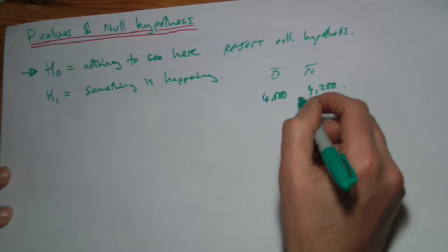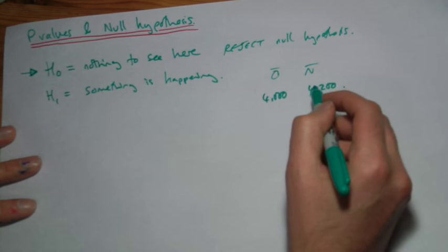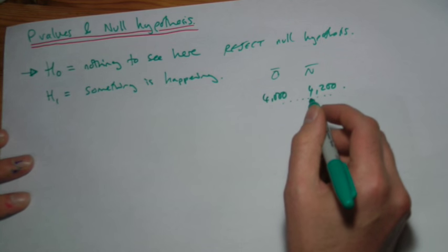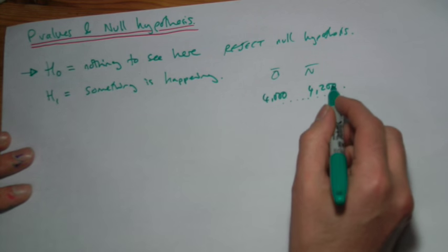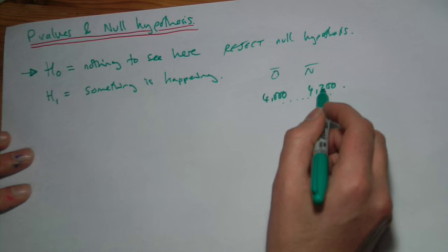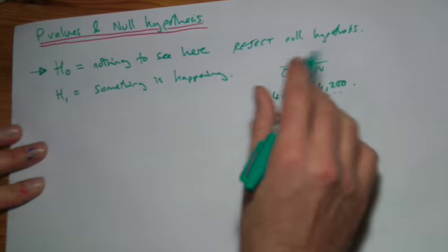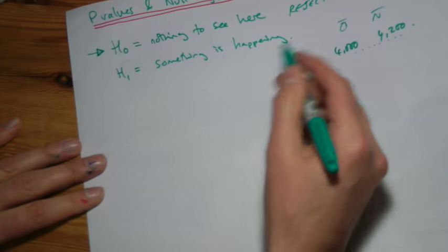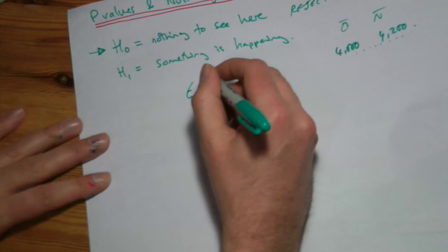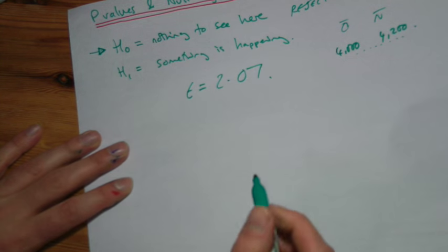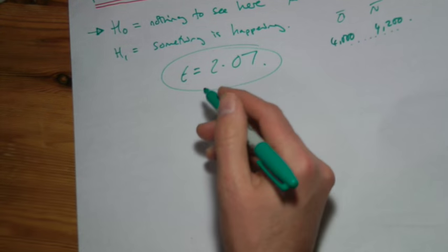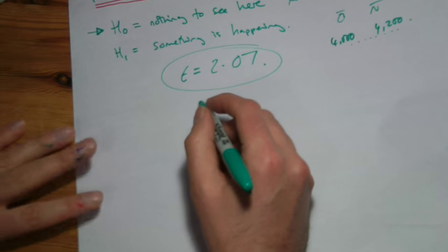What the t-value is going to tell us is how likely is it that this difference that we've got is a real difference. If this is a real value, if that's a real difference, if you do get more hairs growing on this one, how likely is that to have happened? I'm not explaining this very well, but that's okay. Maybe a practical example will make more sense. The version in the book which uses petiole length, we worked out a t-value of 2.07. So that was our t-value.